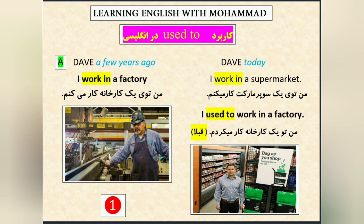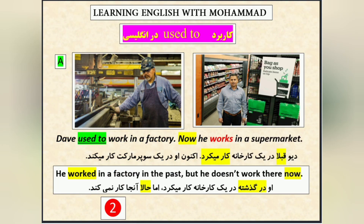I used to work in a factory. یعنی چی؟ یعنی من قبلاً توی کارخونه کار می‌کردم. پس used to دلالت به گذشته داره. Dave used to work in a factory. Dave قبلاً توی کارخونه کار می‌کرد. Now, حالا, he works in a supermarket. حالا توی سوپرمارکت کار می‌کنه.